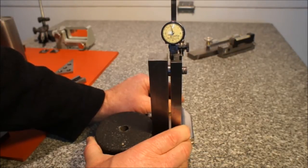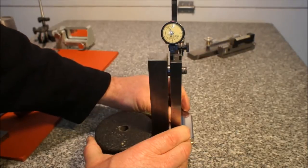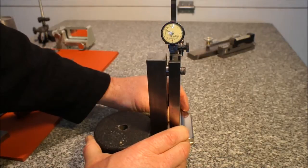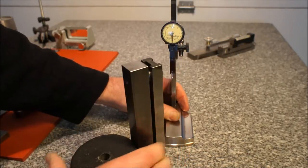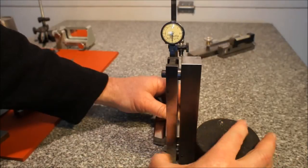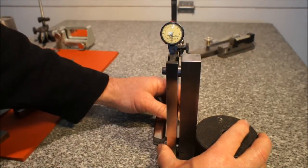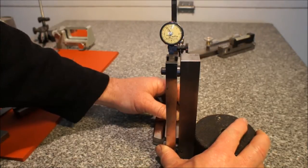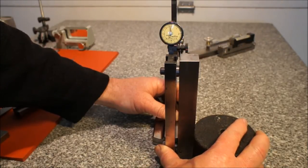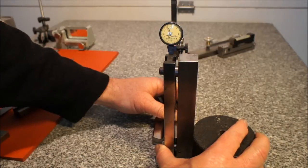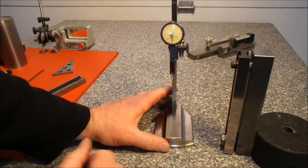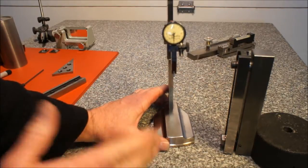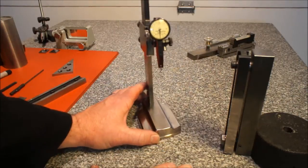That ensures the reversal principle. So we've got approximately 2 tenths shy of zero on my tenths indicator here. Reverse that. Verify that reading. Approximately 2 tenths. 1 to 2 tenths. So we know that minus 2 tenths to the left of zero on this squareness checker right now is perpendicular. It's a 90 degree angle relative to the surface plate itself.